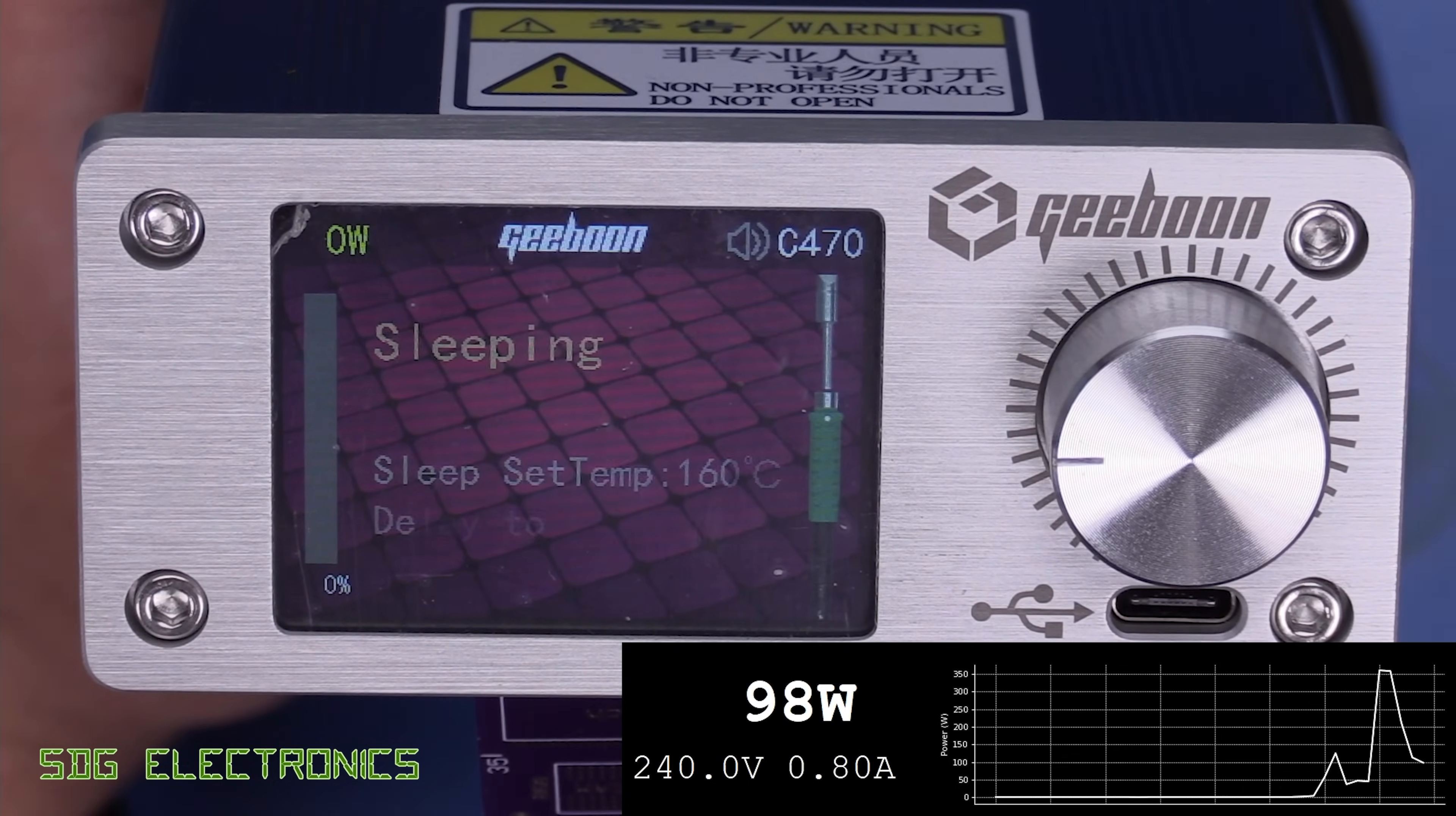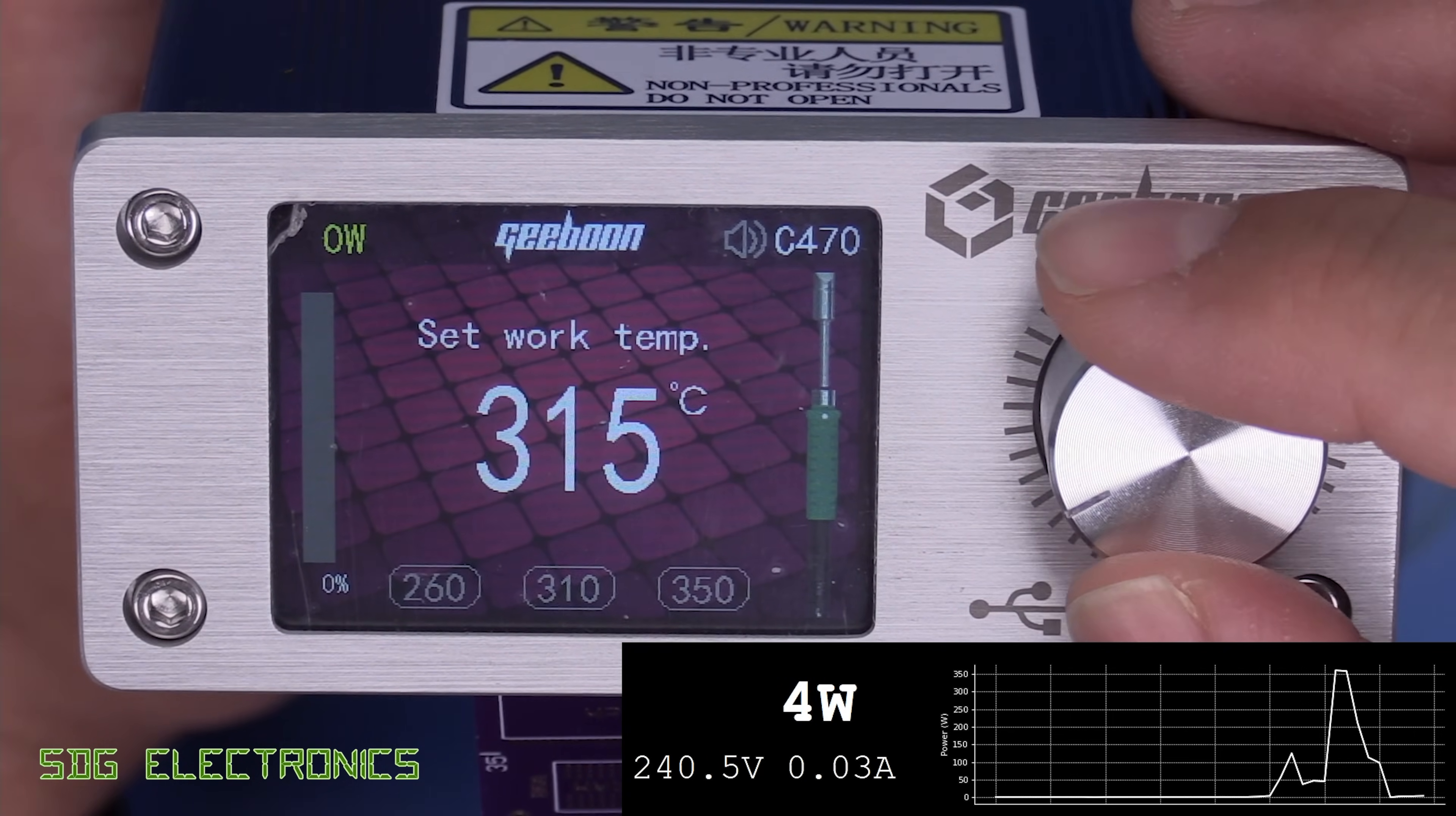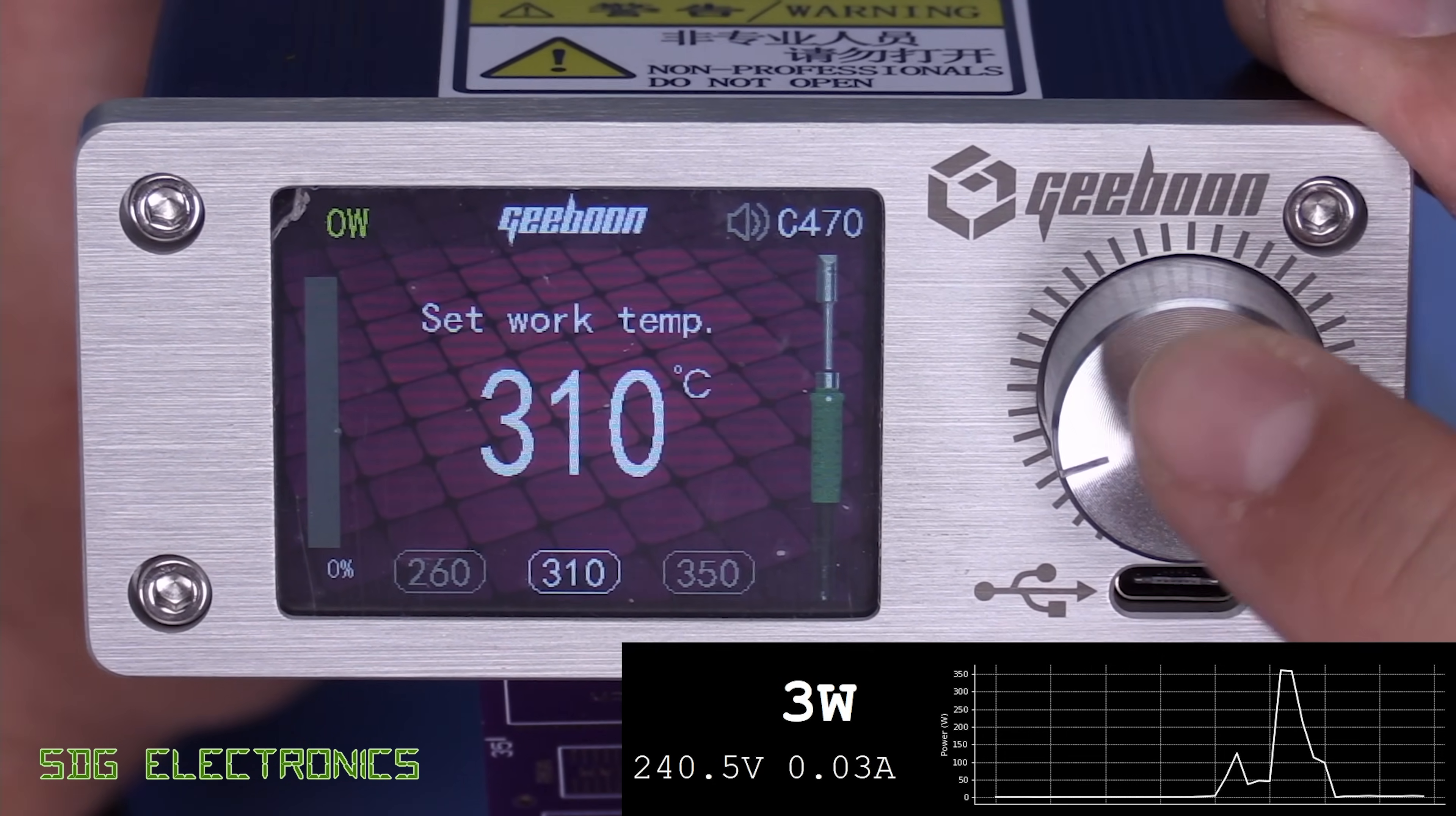And we've got some smoke coming off the cartridge now. So certainly up to temperature there. We can adjust the temperature with the rotary encoder just here. And we've also got some presets that we can scroll between by pressing the encoder. So 350, 260, and 310.